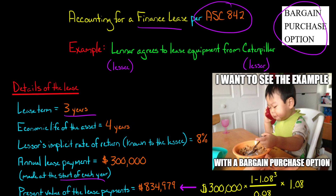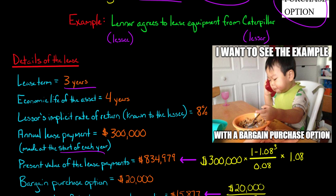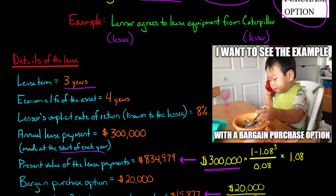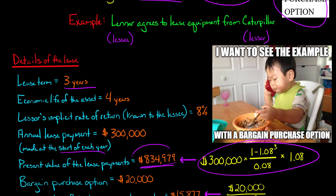The present value of the lease payments — we're going to use the formula for the present value of an annuity due. Our cash flow is $300,000, our discount rate R is 8%, and we've got three periods for the lease term. That formula tells us that the present value of the lease payments is $834,979.